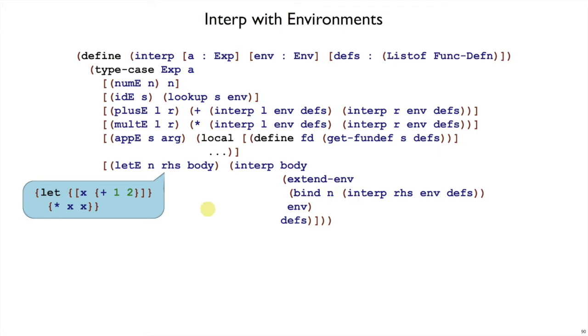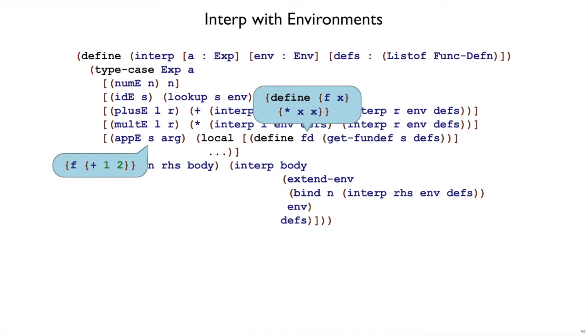Let's look at the application case now because it also involves substitution, which we're replacing with environments. Suppose that we have a function called f applied to plus 1, 2, where f is defined to be taken x and multiply it by itself.